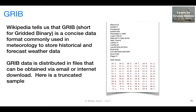GRIB data is something I've only been aware of and using for a couple of years. It's a concise data format used in meteorology to store historical and forecast weather data, and it's generally distributed in files that can be obtained via email or the internet. This is a truncated sample of a GRIB file.